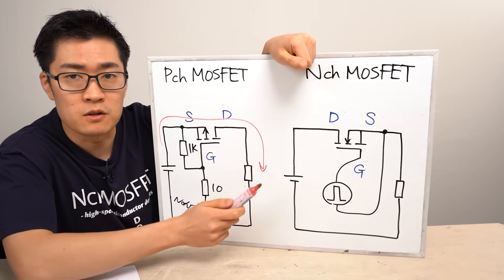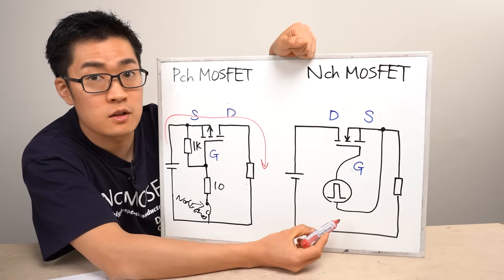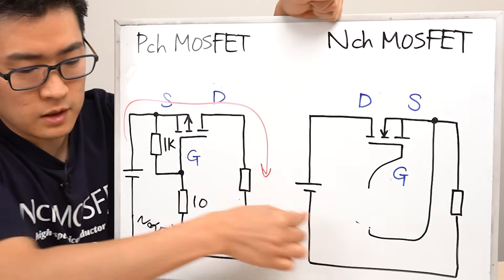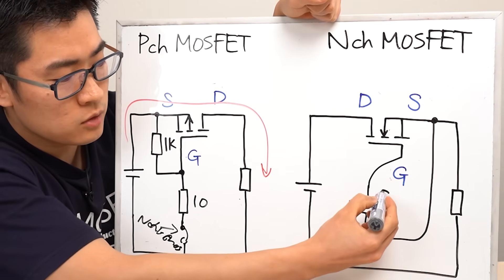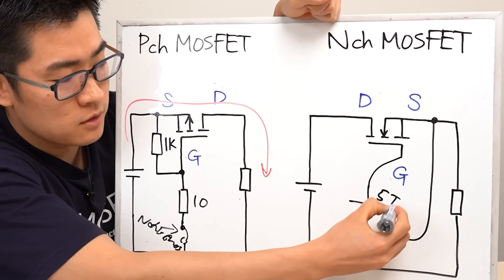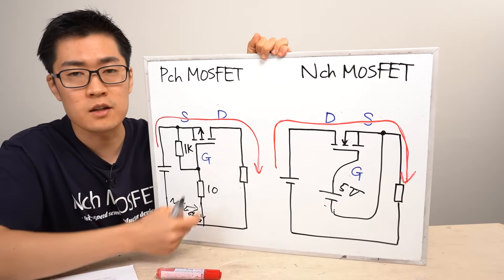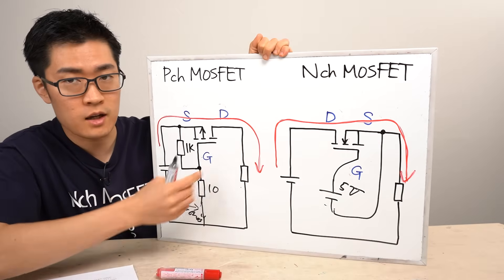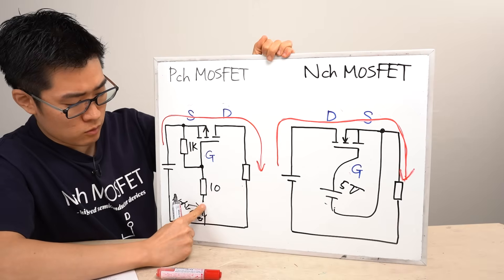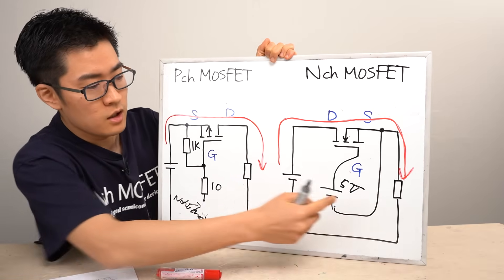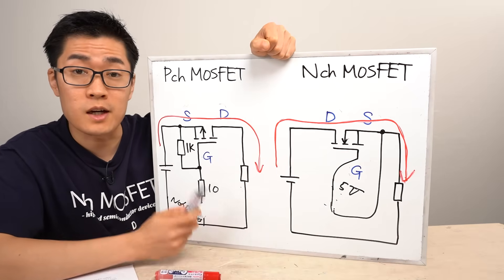In the case of an N-channel MOSFET, current begins to flow when the gate voltage exceeds the source voltage. For example, if you set this point to 5 volts, current will begin to flow in this direction. To stop the current with a P-channel MOSFET, you simply open this point, and in the case of an N-channel MOSFET, you short this point to 0 volts. This allows you to turn the power supply to the load on and off as needed.